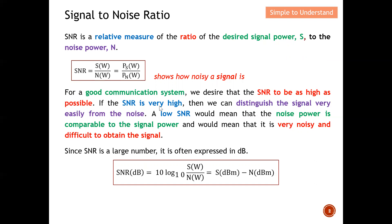If the SNR is very high, we can easily distinguish the signal from the noise. A low SNR means the noise power is comparable to the signal power, making it noisy and difficult to extract the signal. Since SNR can be a very large number, it is often expressed in decibels (dB).